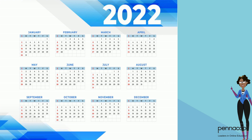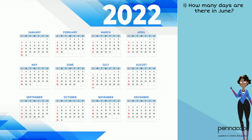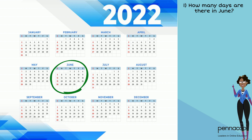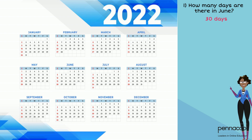Now that we have helped Thomas, let's see if you can use the calendar to answer these questions. Question number one: how many days are there in the month of June? Find June on the calendar and look for the biggest number within the month of June. The biggest number is 30. Therefore, there are 30 days in June.